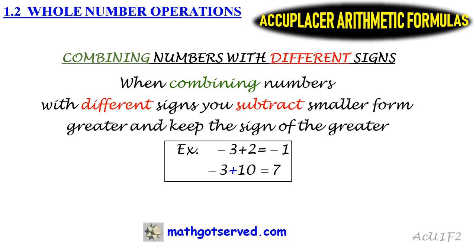Now let's take a look at two examples that illustrate this procedure for combining numbers with different signs. For example, if you have negative 3 plus 2, you notice that the negative 3 and the 2 have different signs.